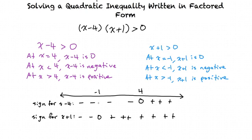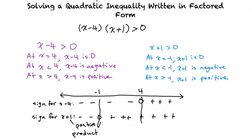We can separate the number line into regions: between negative infinity and negative 1, between negative 1 and 4, and between 4 and positive infinity. After doing this analysis, we can see that all values of x less than negative 1 make a positive product, because the product of two negatives makes a positive. Then all values of x greater than 4 also make a positive product, because the sign is positive for both factors when we multiply them.